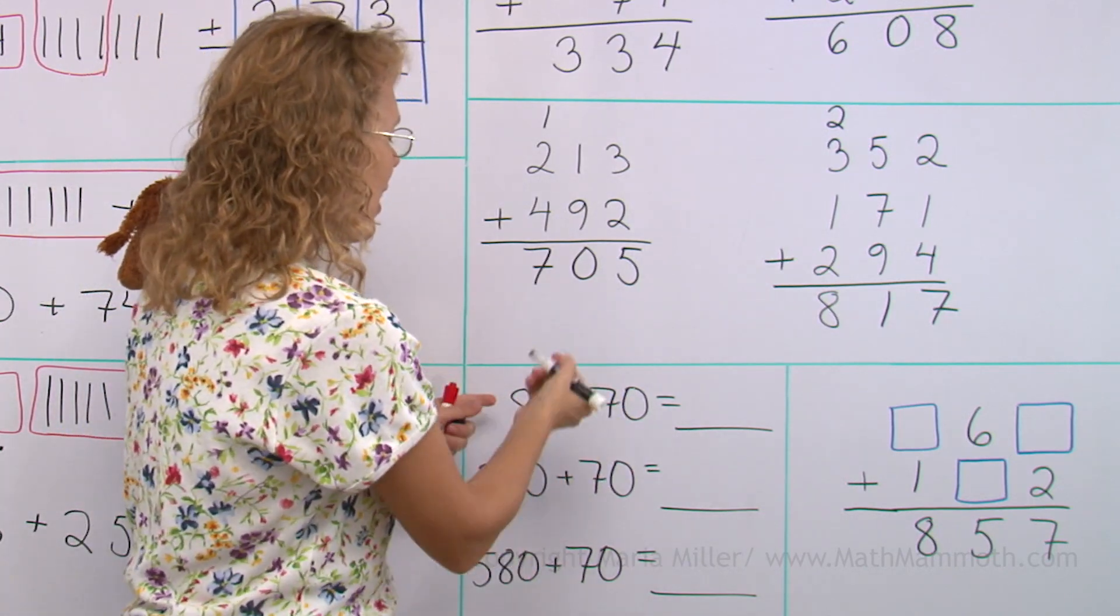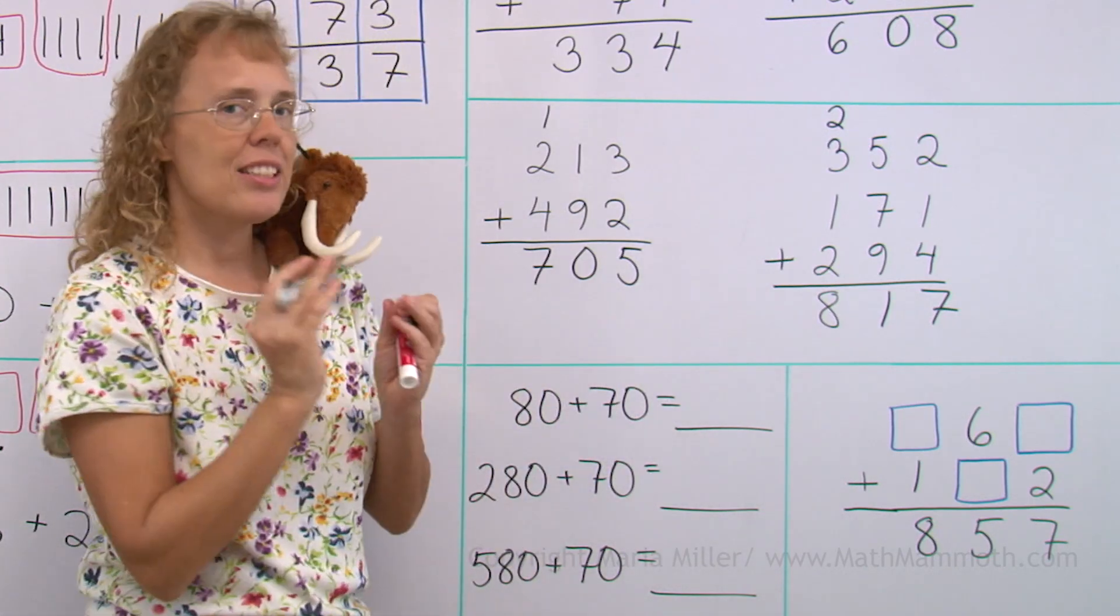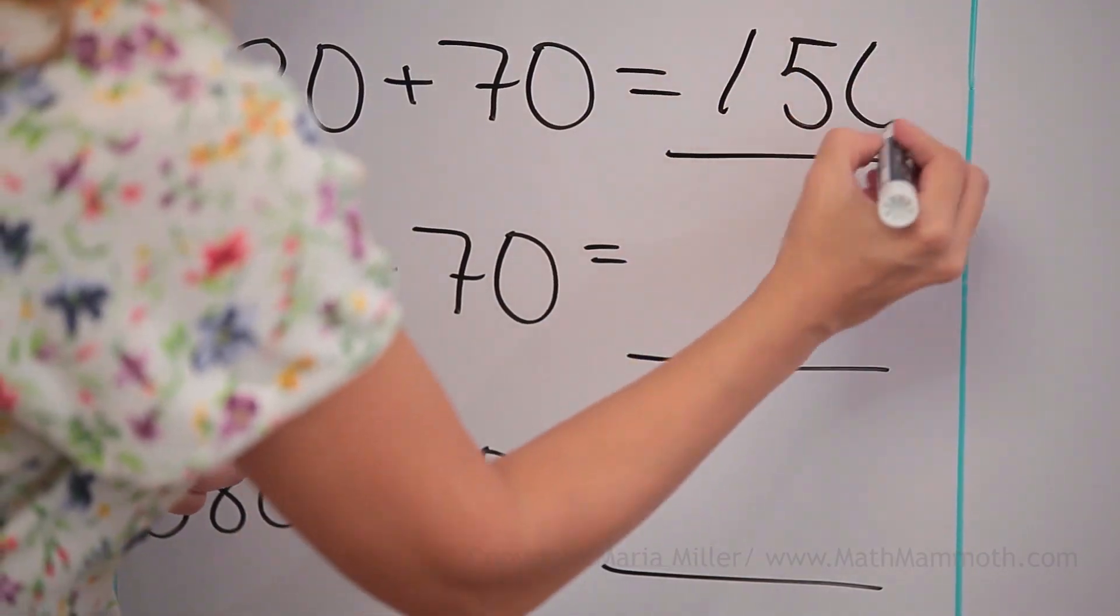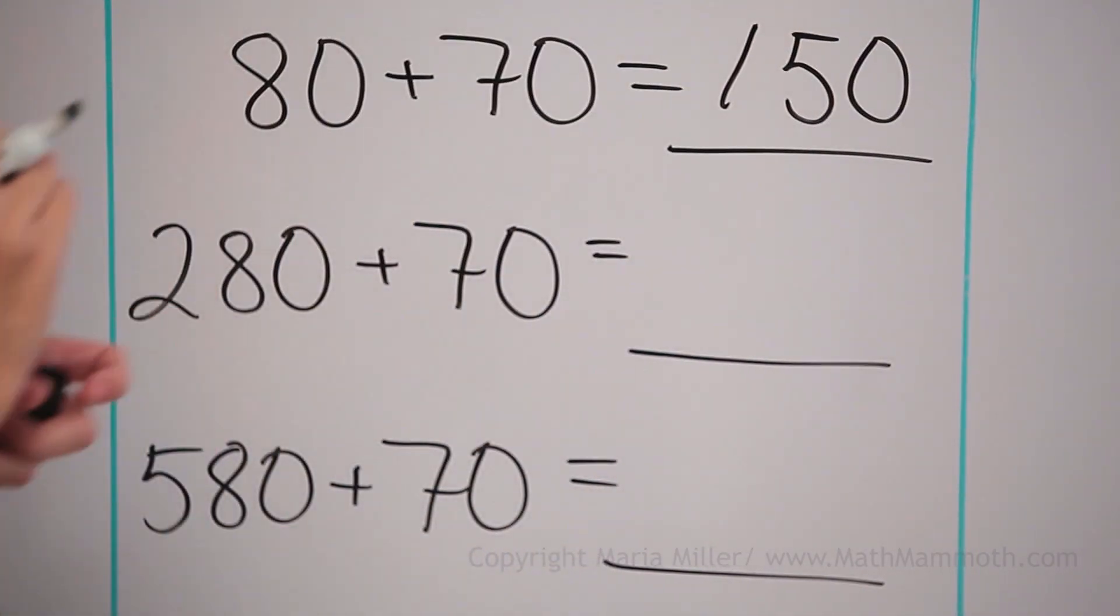So what goes here? We get eight tens and seven tens. Fifteen tens is the same as one hundred and fifty. Ten tens and five tens. Fifteen tens.